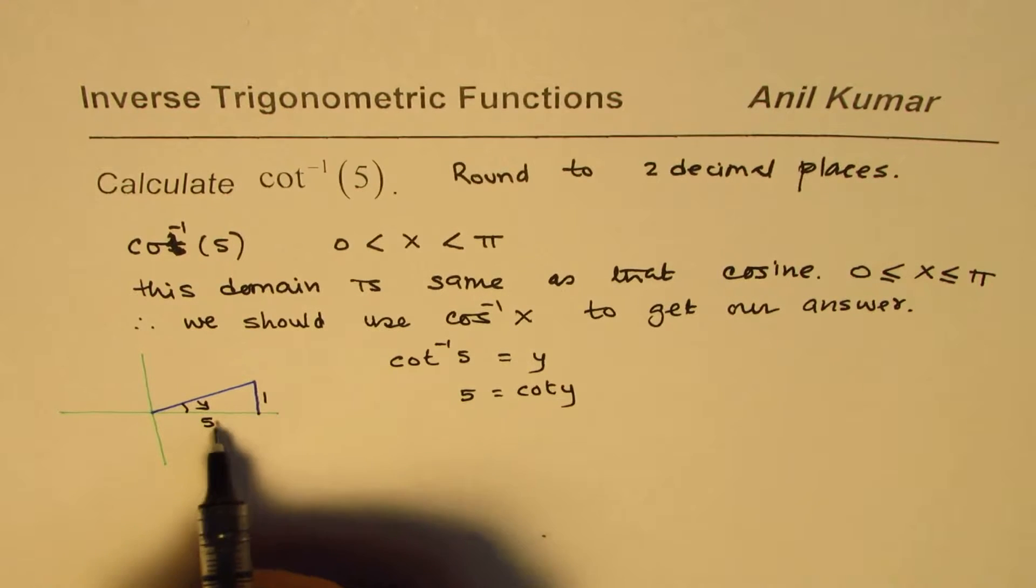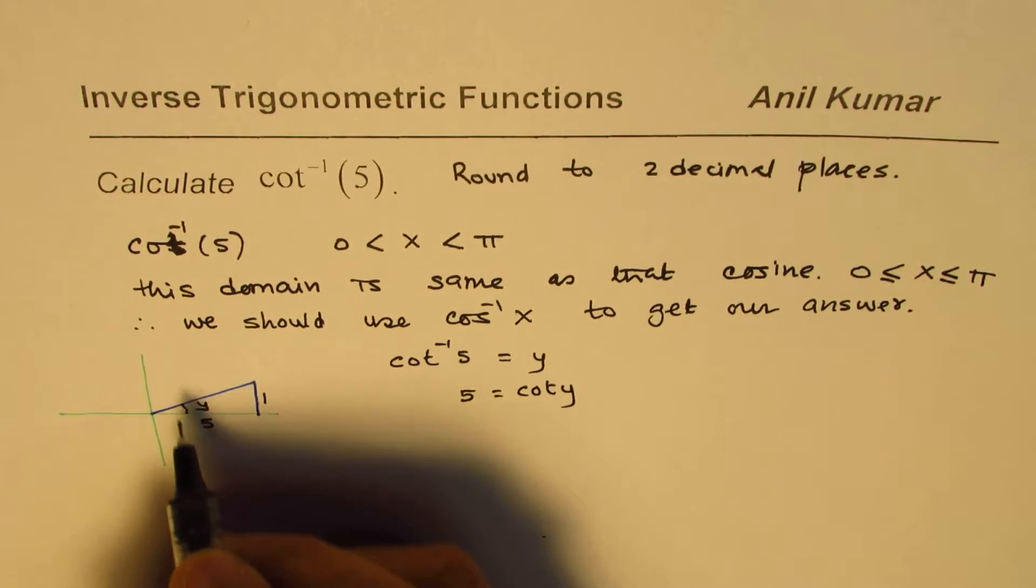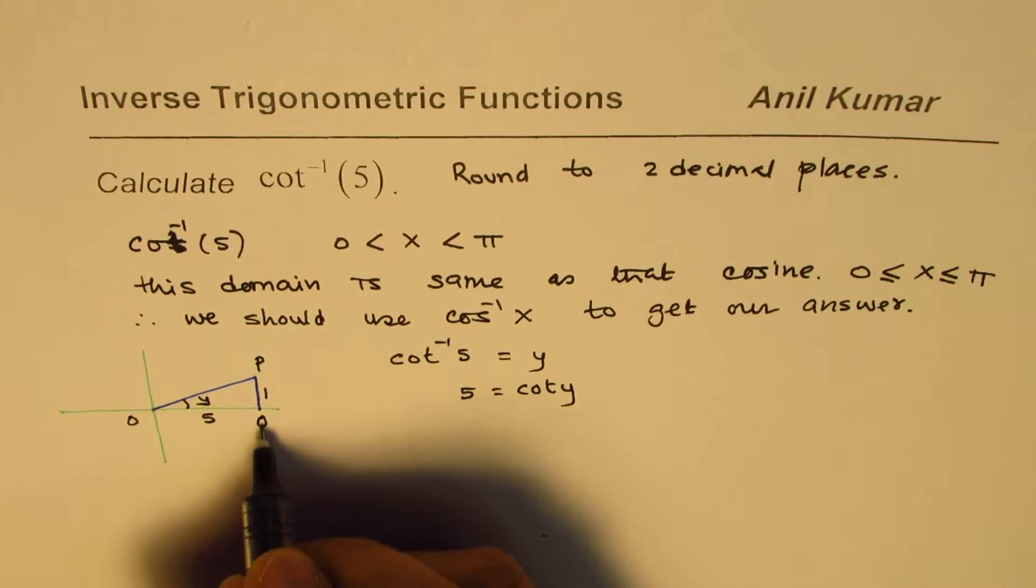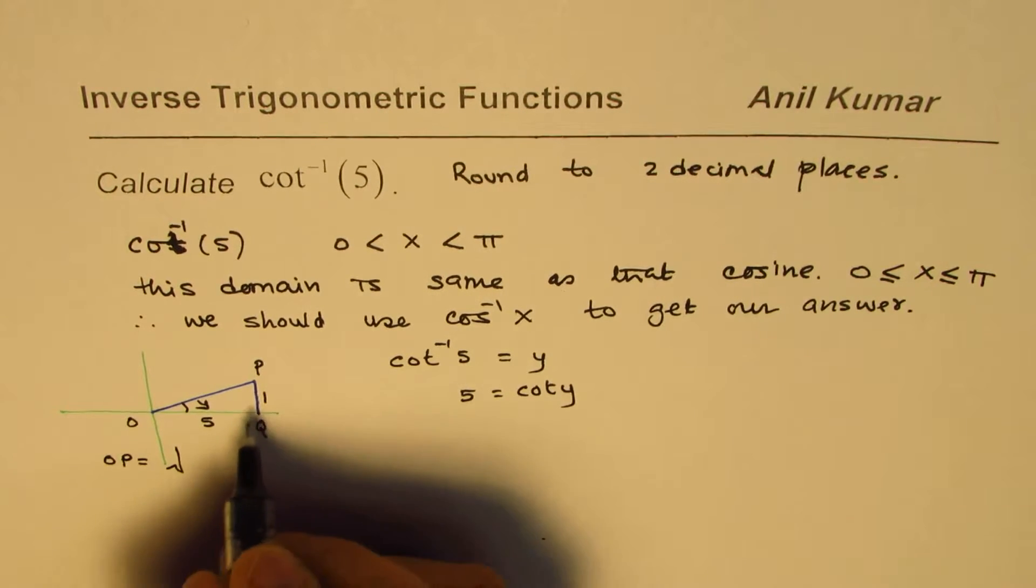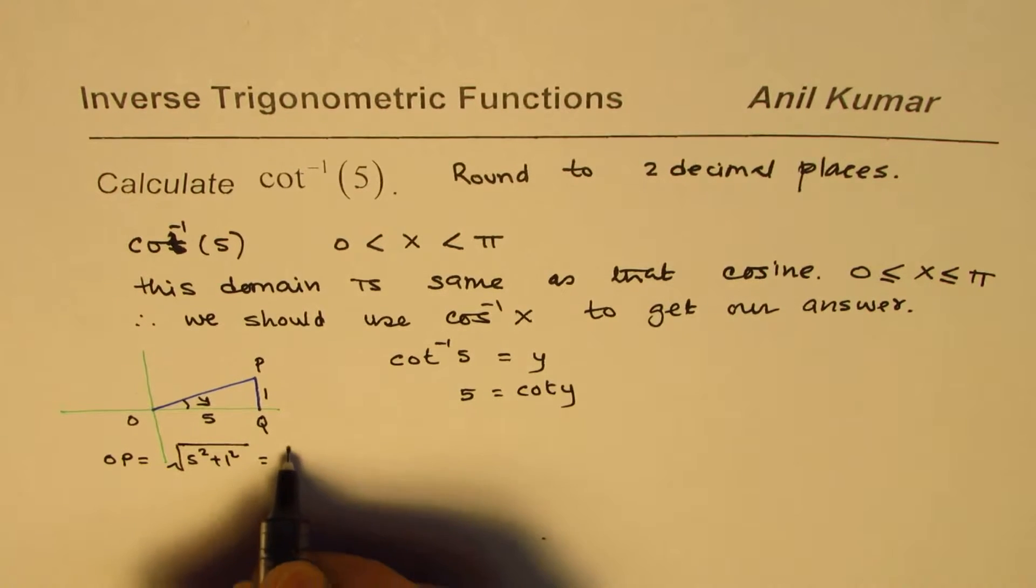In this triangle, cot y is 5, which is base over opposite side. You can always find the hypotenuse. If this point is O, this is P, and this is Q, then OP will be equal to √(5² + 1²), which is √26.